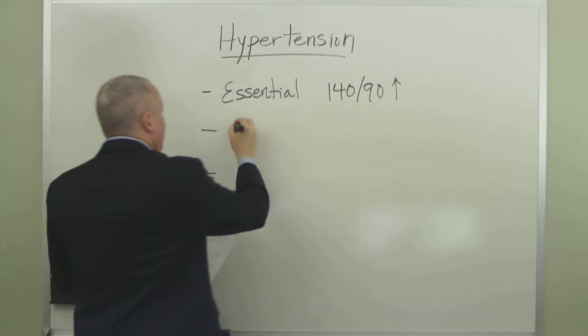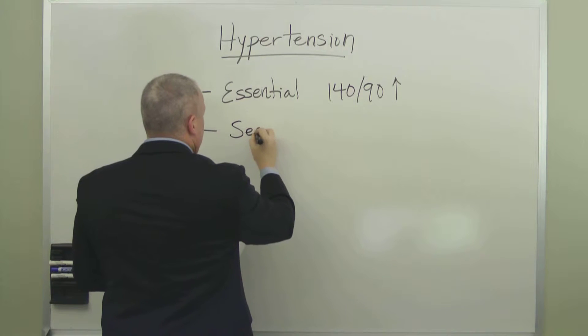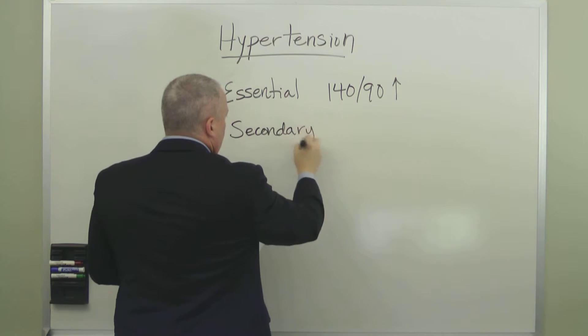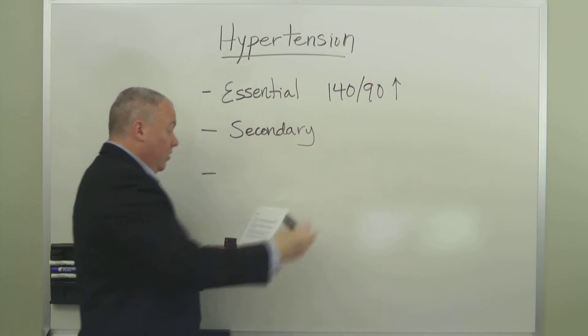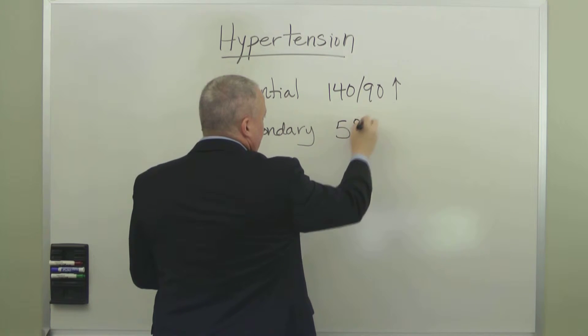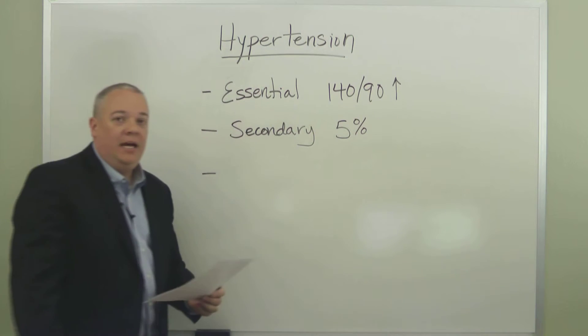Secondary hypertension is the next level. Secondary hypertension only affects about 5% of those who have hypertension.